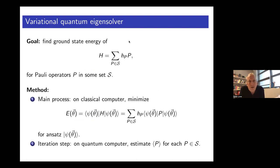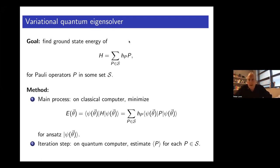Let's talk about the variational quantum eigensolver. The goal here: we have a Hamiltonian expressed as a linear combination of Pauli operators, where a Pauli operator is a tensor product of Pauli matrices and the identity. We have some set of Paulis in our Hamiltonian; the size of that set must scale polynomially in the number of qubits. What we're interested in doing is finding or estimating the ground state energy of this Hamiltonian. VQE is the Rayleigh-Ritz principle implemented on a quantum computer. We define an objective function — the energy as a function of a set of variational parameters theta — which is just the expectation value of the Hamiltonian in the ansatz state.